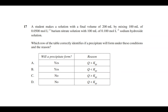A student makes a solution with a final volume of 200 mL by mixing 100 mL of 0.0500 mol/L barium nitrate with 100 mL of 0.1000 mol/L solution. The question asks whether a precipitate will form. The answer is no, because the reaction quotient is less than the Ksp — meaning the solution has not yet reached its maximum solubility limit.